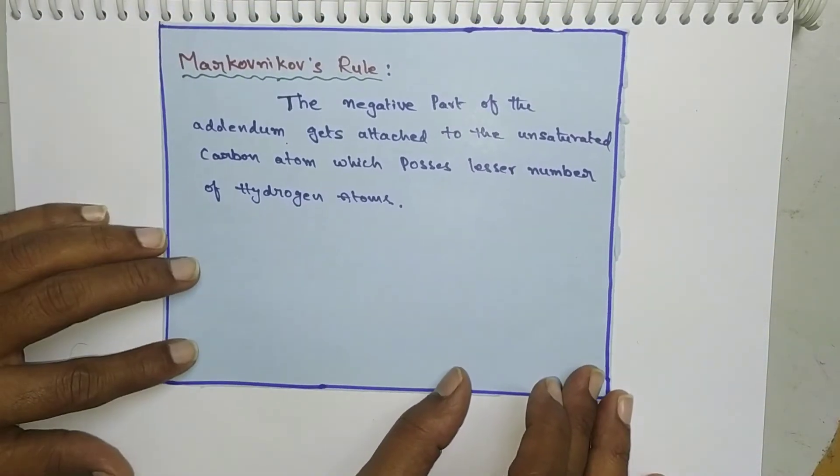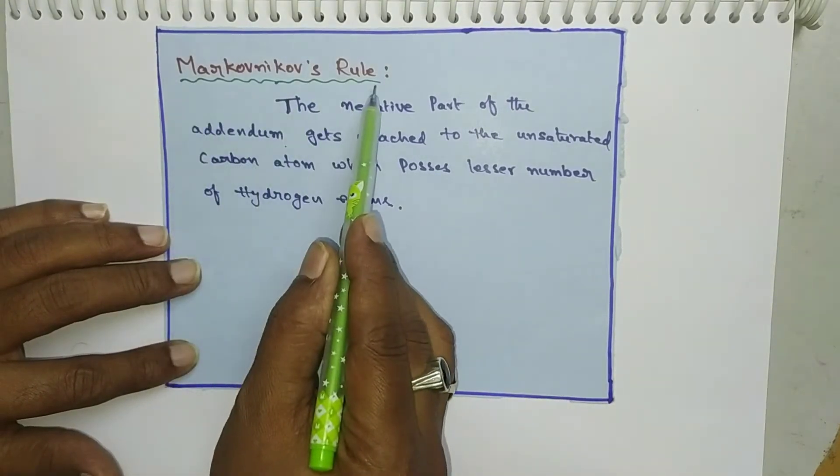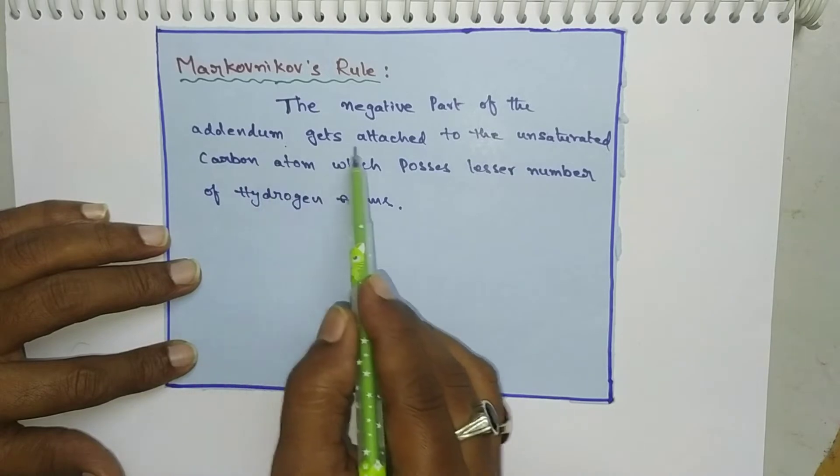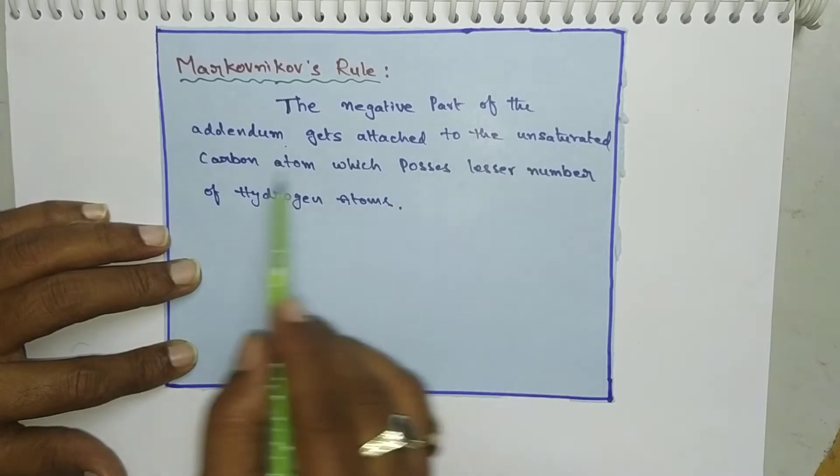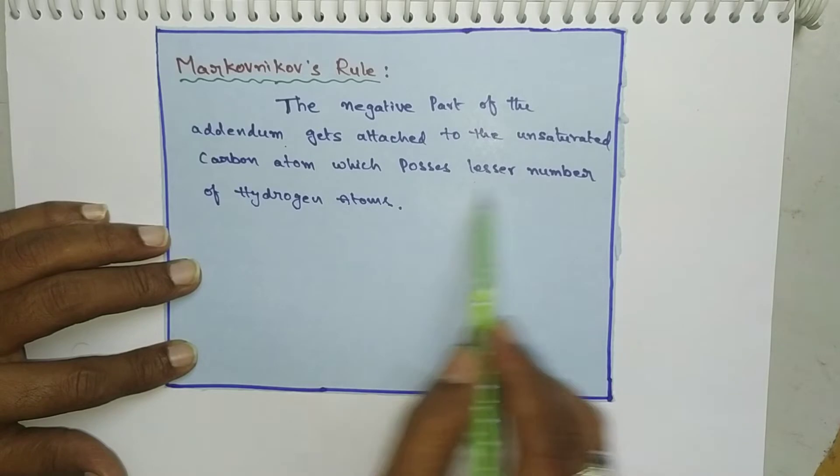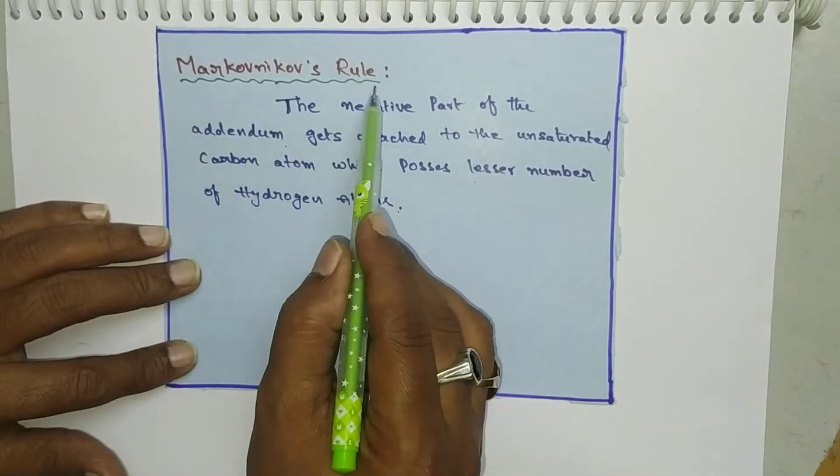Hi friends, welcome back. In the previous video we have already discussed about Markovnikov's rule — I will provide the link in the description for your reference. So somebody asked to post a video on anti-Markovnikov rule. Markovnikov's rule states the negative part of the addendum gets attached to the unsaturated carbon which possesses fewer number of hydrogen atoms.